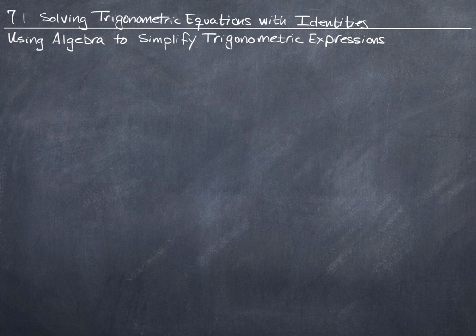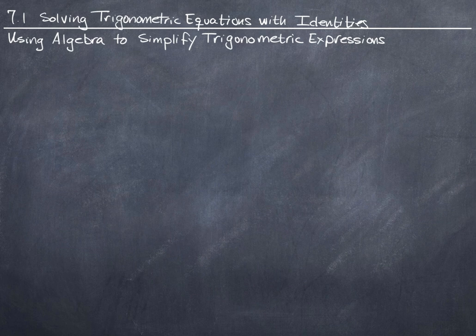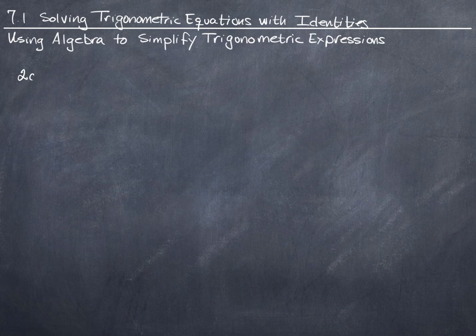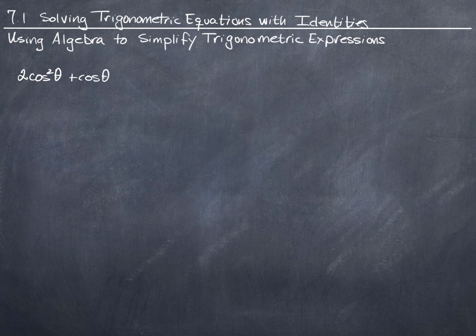So, for example, if I have an identity, well, I'll use the one in your textbook. In example 8, they have 2 times cosine squared of theta plus the cosine of theta